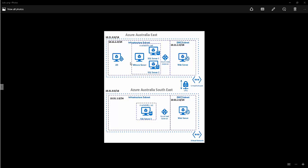When you look at the components, this primary availability group is deployed in an Availability Set, which is important to be highly available in the Azure East Data Centre. It's very important for those three servers to be in the same availability set. Also, the load balancer is very important to configure the floating IP of the Availability Group Listener — that's achieved through the Azure load balancer.